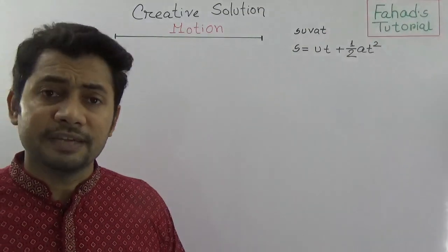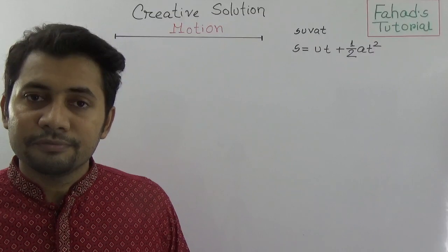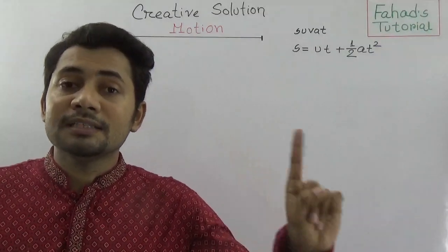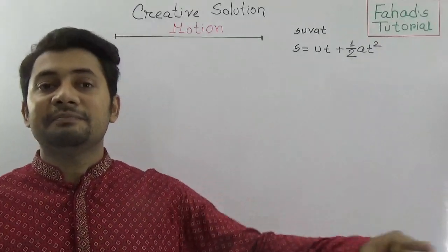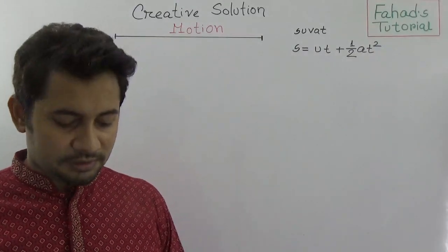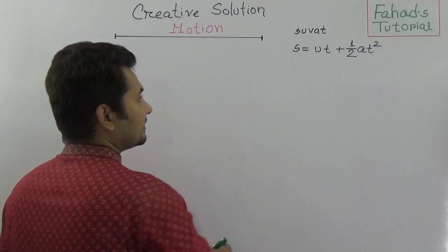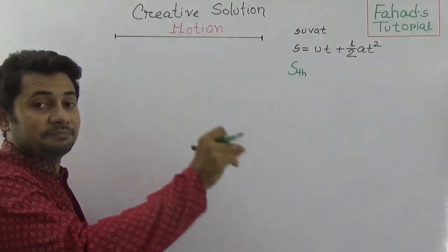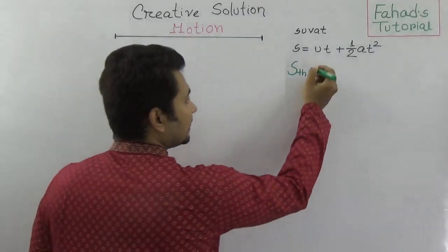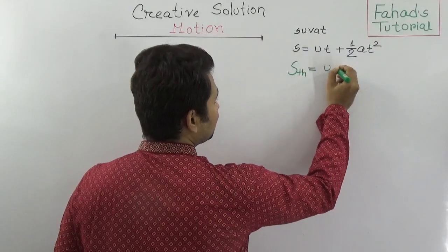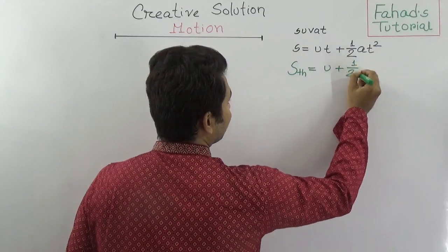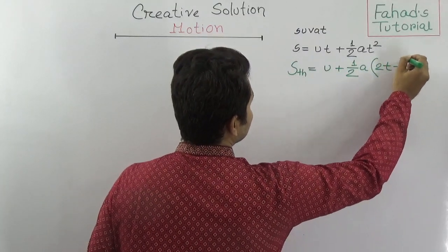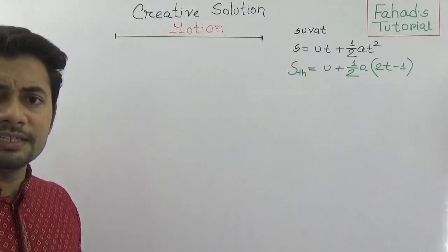S = UT + ½AT². But if the question asks to find the distance travelled in one second among the time period, we can use another principle — the Nth second formula: S_nth = U + ½A(2T − 1).